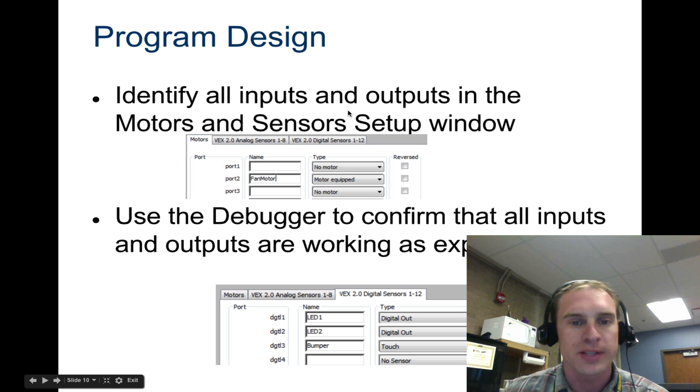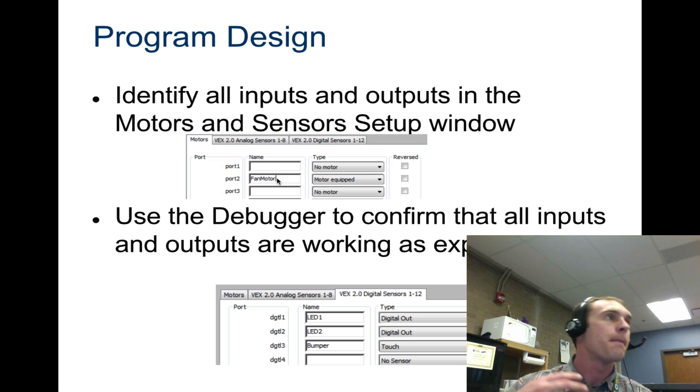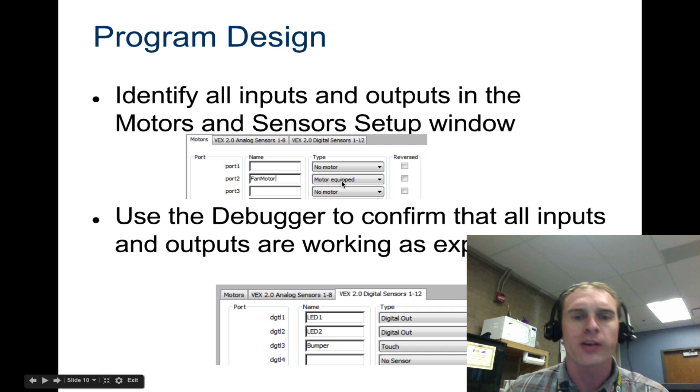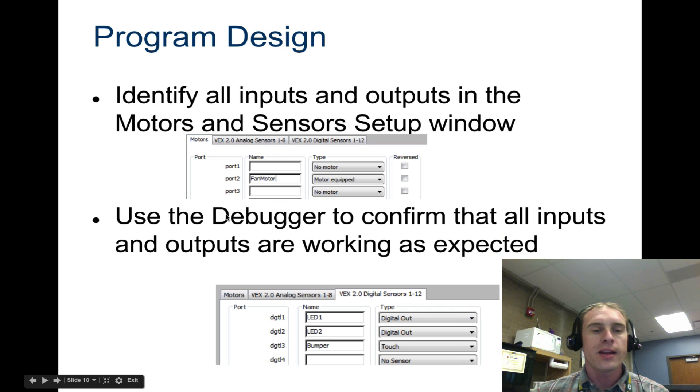So we're first going to identify all the inputs and outputs. So this would be if you did it manually, which you're going to have to do down the road. They put in the motor port, they put fan motor. That's what they're calling it. You want it to always be descriptive. Don't just call it like motor one. Call it something that it's actually running. And I believe ours, we wouldn't call it motor equipped. It would be a 269 motor. Then you would go over to the digital sensors here. And you put in your LED1, LED2, and then your bump switch. And they make it a touch switch. So we'll use the debugger to confirm everything's working.